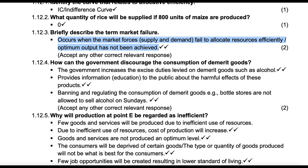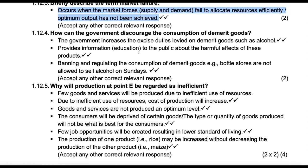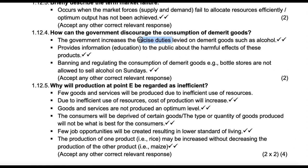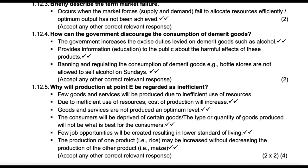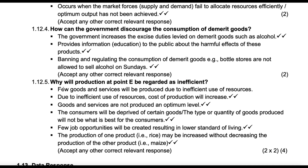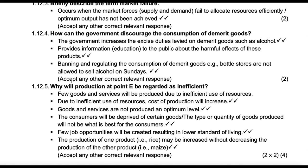They have a different definition here which says: occurs when the market forces of demand and supply fail to allocate resources efficiently, or optimum output has not been achieved — same thing. How can government discourage the consumption of demerit goods? Government can levy or increase sin tax. Secondly, provide information or educate people on the harmful effects of these products. Thirdly, banning or regulating the consumption of demerit goods. Why will production at E be regarded as inefficient? E is that point inside the PPC. Few goods and services will be produced due to inefficient use of resources. Costs of production will increase and so on.